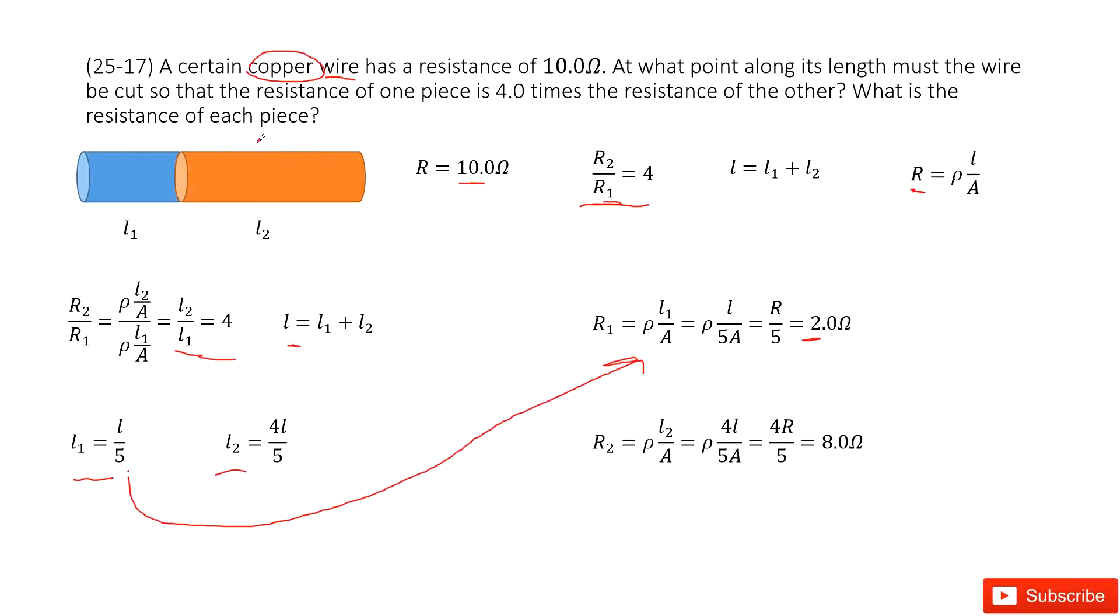This part is done. We look at the second part, R2. R2 is ρ times L2 over A. We input L2 as 4L divided by 5.